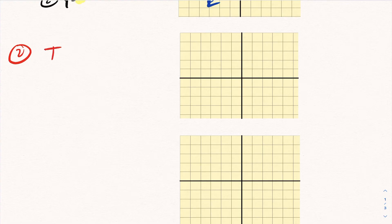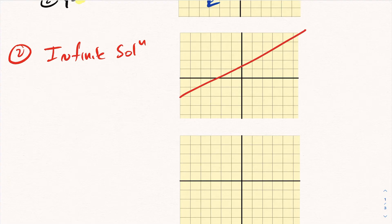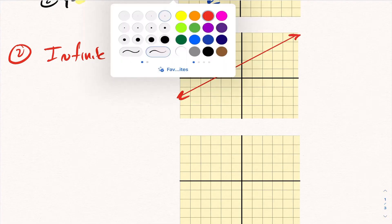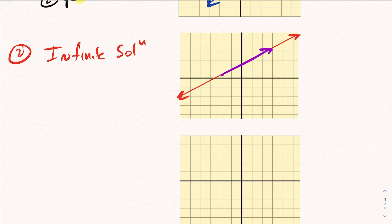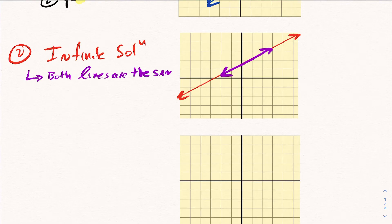The second type of solution you can have is what's called infinite solution. Visually, what infinite solution looks like is you have one linear equation, and your second line is actually the exact same equation. So both lines are the same — that's how you have an infinite solution.